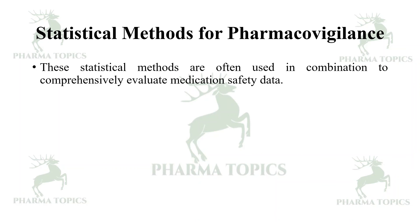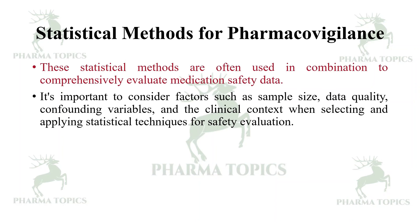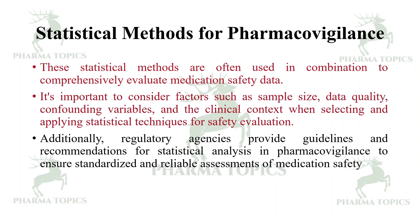These statistical methods are often used in combination to comprehensively evaluate medication safety data. It is important to consider factors like sample size, data quality, confounding variables, and the clinical context when selecting and applying statistical techniques for safety evaluation. Additionally, regulatory agencies provide guidelines and recommendations for statistical analysis in pharmacovigilance to ensure standardized and reliable assessments of medicinal safety.